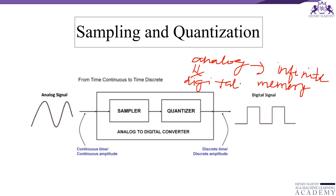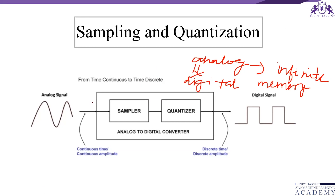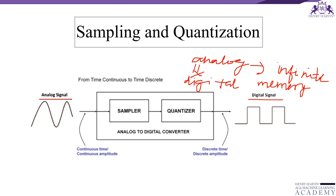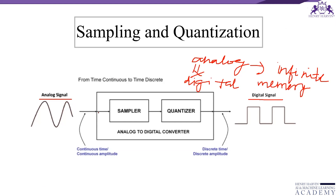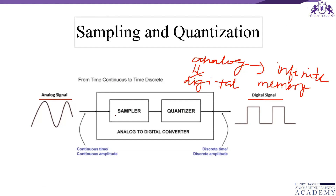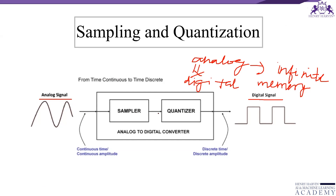So how do we create a digital image? We have to convert the continuous data into its digital form — that is, convert the analog signal into a digital form. There are two processes involved. One is sampling and the other is quantization. What is meant by sampling? Sampling means digitization of coordinate values. What is quantization? Quantization means digitization of amplitude values.